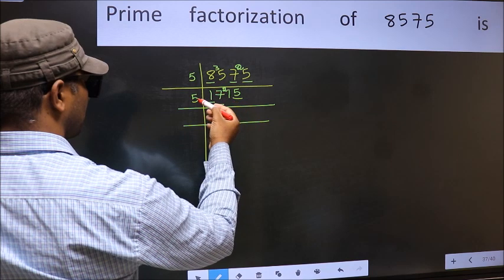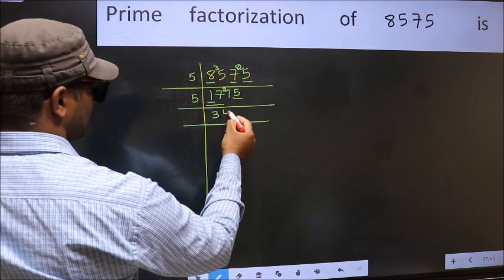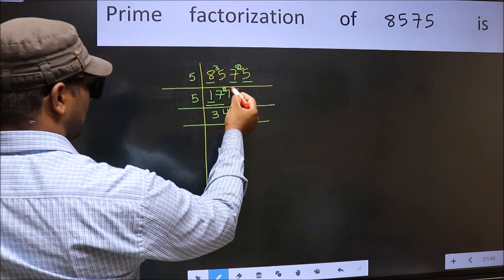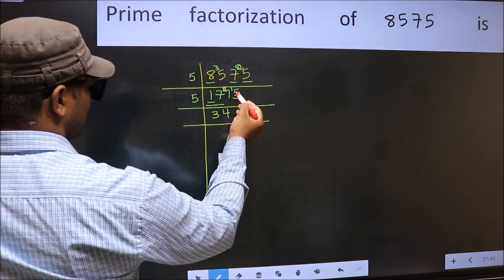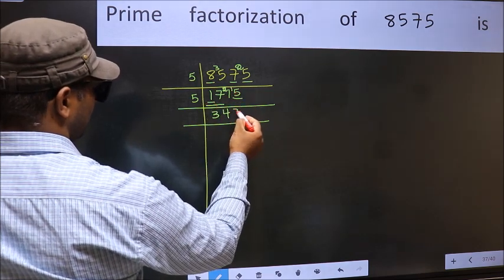A number close to 21 in 5 table is 5×4, 20. 21-20, 1, carried forward 15. When do we get 15 in 5 table? 5×3, is 15.